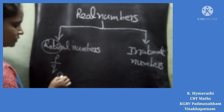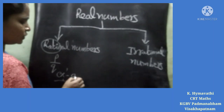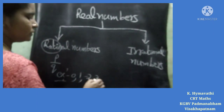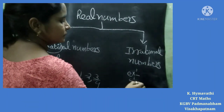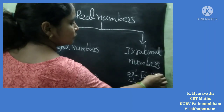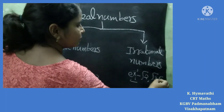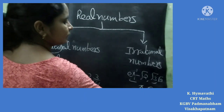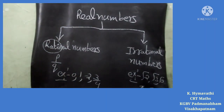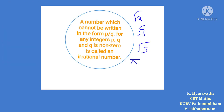Examples of rational numbers include 0, 1, minus 2, and 3 by 4. Examples of irrational numbers include root 2, root 3, root 5, and also pi. A number which cannot be written in the form P by Q for any integers P and Q, where Q is non-zero, is called an irrational number.